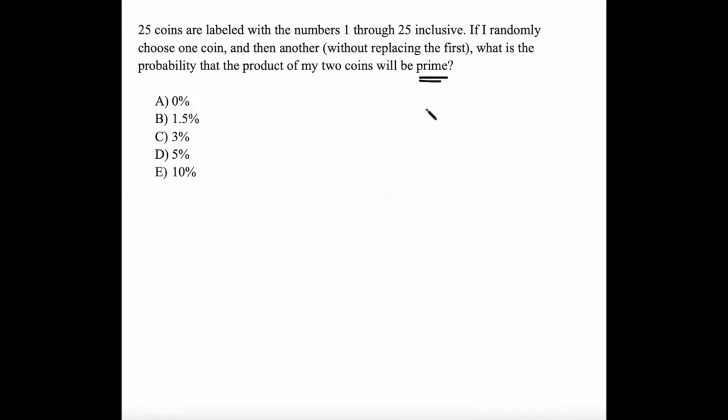Now you might look at this and say, well, if I'm multiplying two numbers together, then the result can't be prime, so it should be zero, right? But remember, one of these numbers is 1. So if I picked 1 and then I picked a prime number and multiplied them together, then the result would be prime. So the answer is not 0%. It is possible.